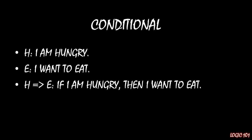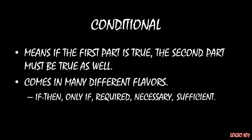Take two simple sentences: H, 'I am hungry,' and E, 'I want to eat.' You put an arrow from the first one to the second one — IF H, THEN E — and you get: IF I am hungry, THEN I want to eat. That means if the first part is true, if I am hungry, then the second part must be true as well — I must want to eat. If the first half is false, then the second half could be true or false.